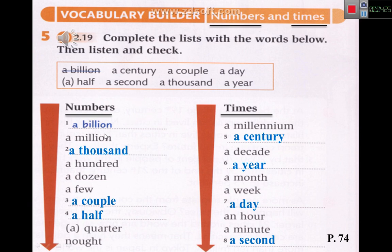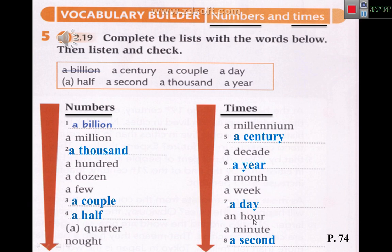The listening is done and we did it together. A billion, a million, a thousand — less than a million. Then a hundred, a dozen, a few. A couple means two. A half, a quarter, and naught. For times: a millennium means a thousand years, a century is a hundred years, a decade is ten years. A year has 12 months, then a month, a week, a day, an hour, a minute, and a second.